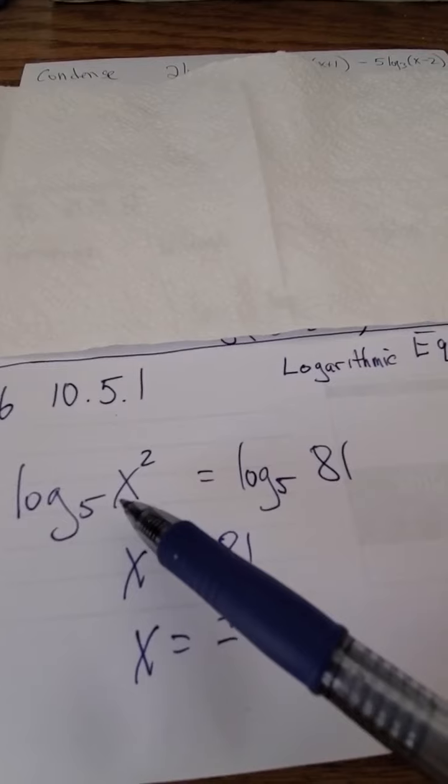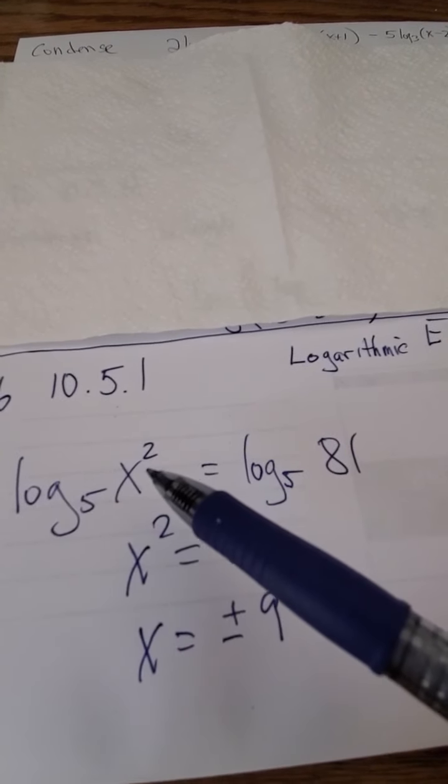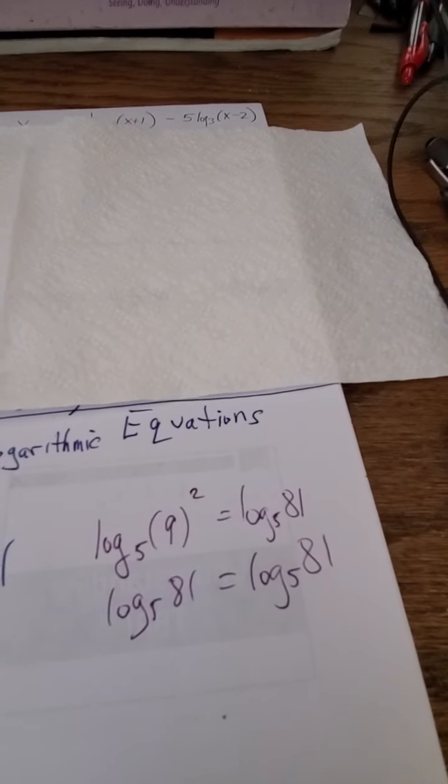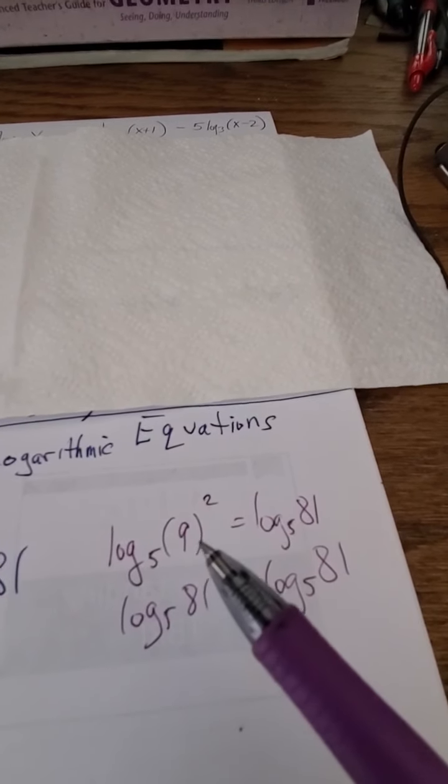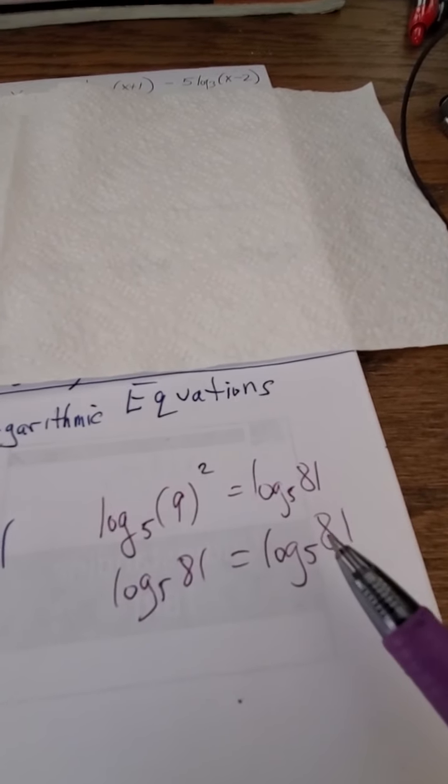If I plug plus or minus 9 into the original equation, that just becomes 81. Remember, even if I put a negative 9 and I square it, it becomes a positive 81, so either way we'll go. Let's just do that anyway. If I plug in x equals positive 9, I get the log of 9 squared equals 81, which is log 81 equals log 81, all base 5. Check, check, check, so that's good.